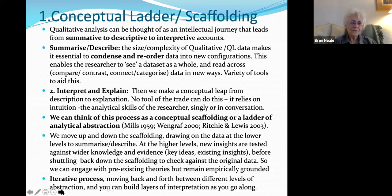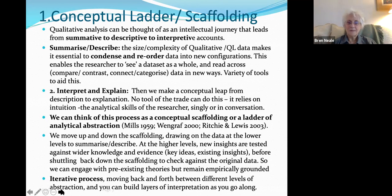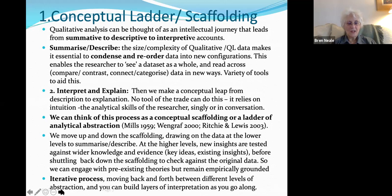This process of moving from summarizing to description to interpretation can be thought of as a conceptual scaffolding or ladder — sometimes called a ladder of analytical abstraction, best described in Richie and Lewis 2003. We move up and down the scaffolding: at the lower levels we summarize and describe from raw data; as we go up, we test insights against wider knowledge and existing evidence; then we shuttle back down to check against the original data. This iterative process keeps us empirically grounded while we build layers of interpretation.